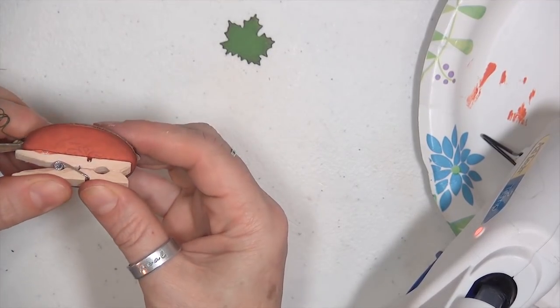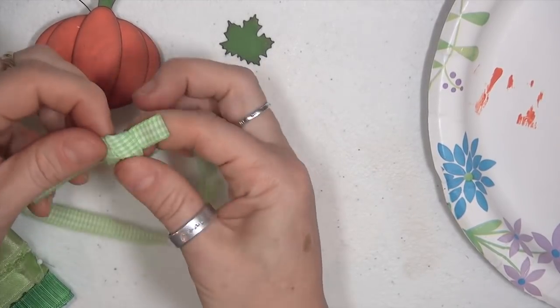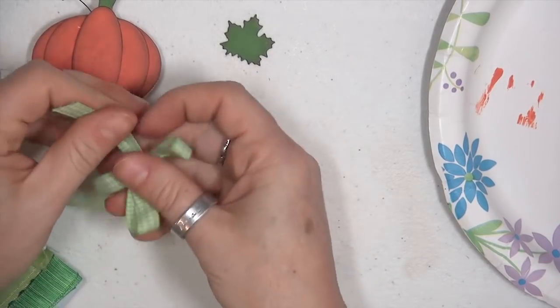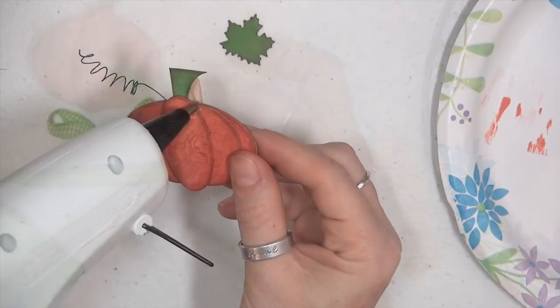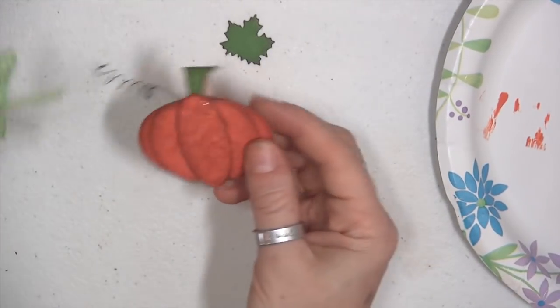I'm going to glue this little mini clothespin onto the back. You can also get adhesive magnet buttons, and those would be really cute on the fridge as well. For the front I'm adding a little bow, and then I'll tuck the leaf right under the lower edge there, and that is done.